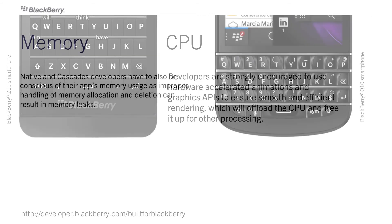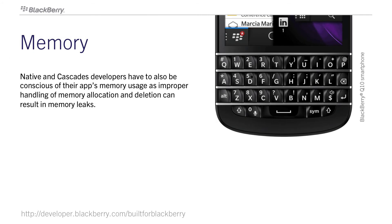Native and Cascades developers also need to be conscious of their app's memory usage. Improper handling of memory allocation and deletion can result in memory leaks. These leaks can lead to application crashes, unexpected shutdowns, and poor overall system performance.